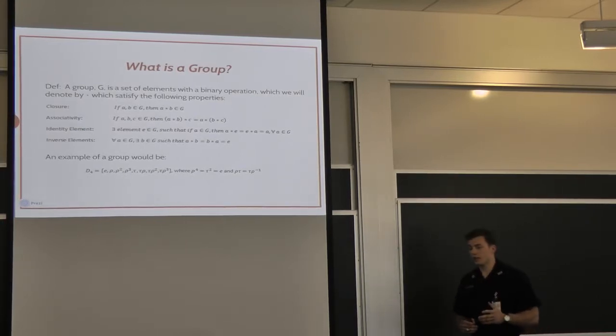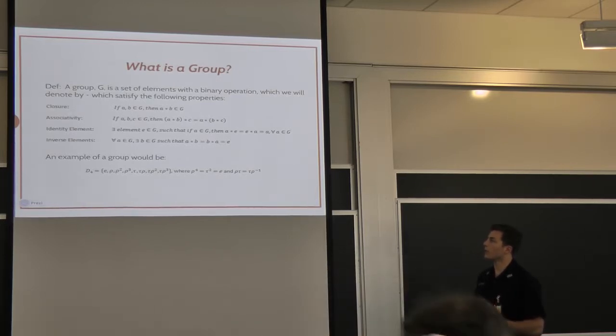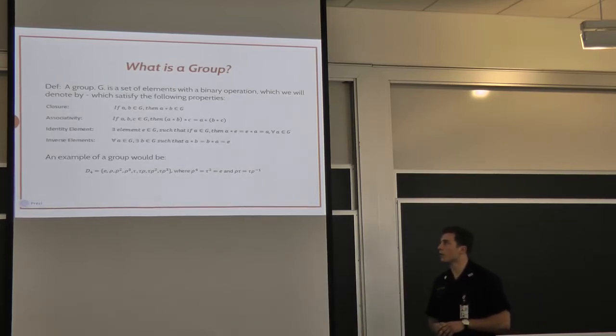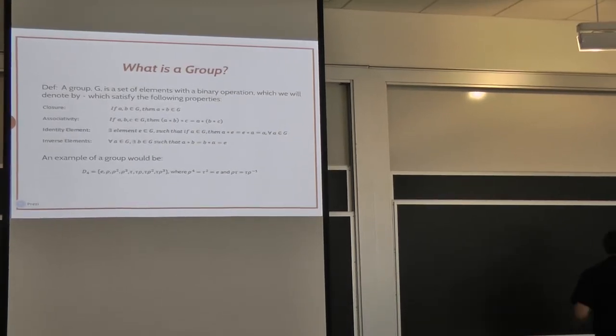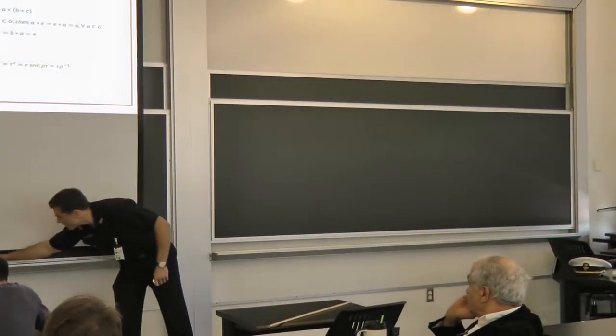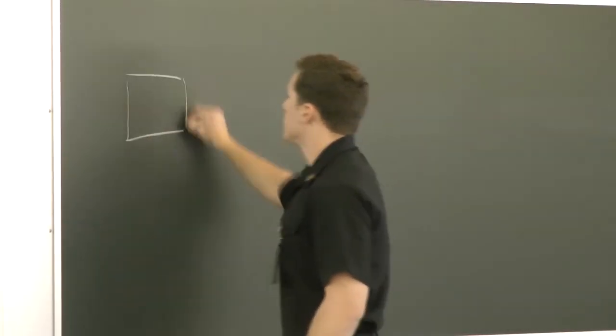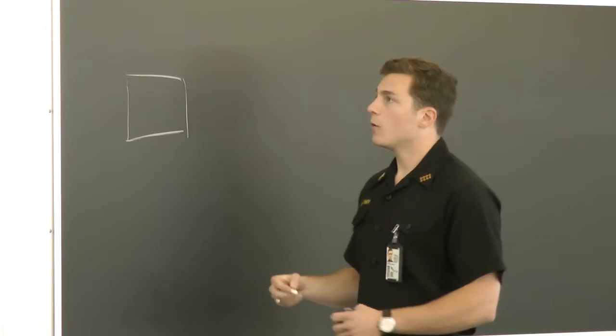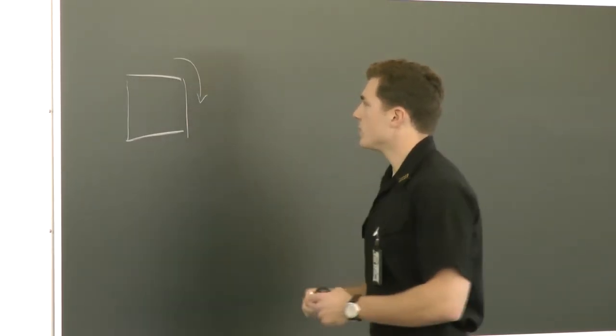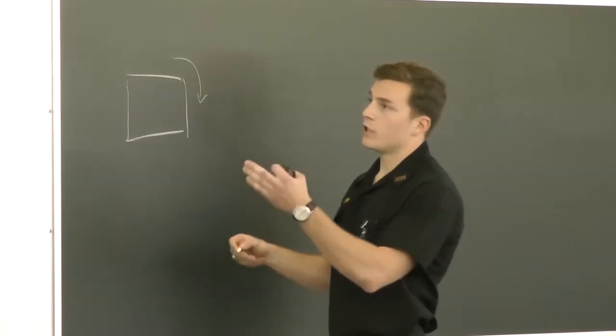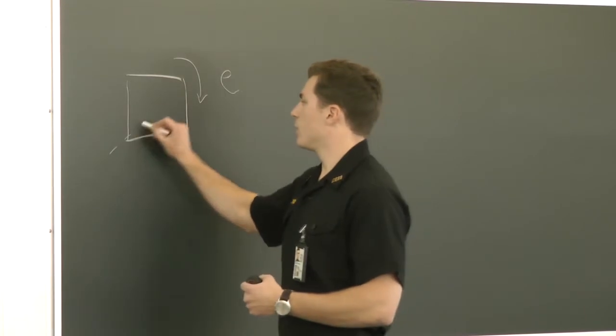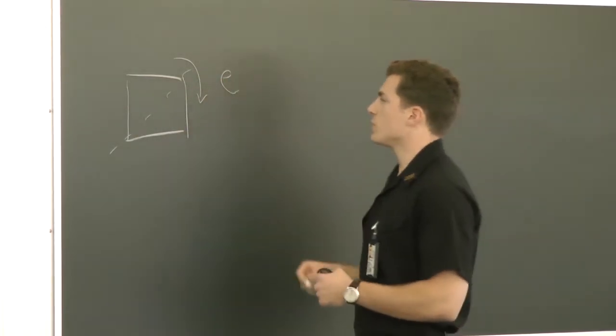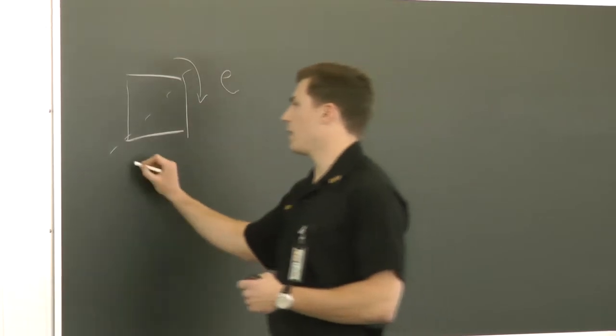So the best way to think about this is the symmetries of a square with rotations and reflections. So when you think about the symmetries of a square, you have rotations and reflections. In our case, we consider rotations clockwise 90 degrees, which we denote by rho. And we consider reflections of that square through these vertices in particular, and we denote that as tau.